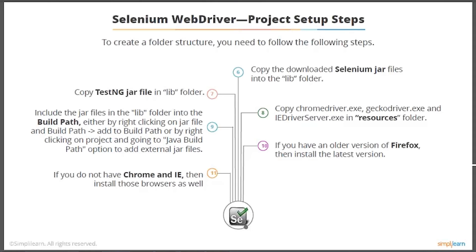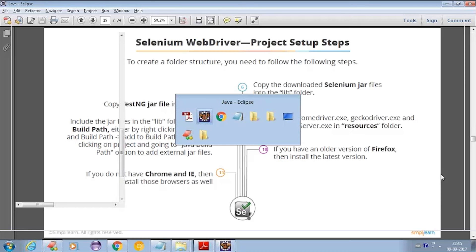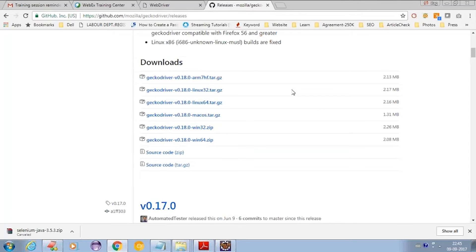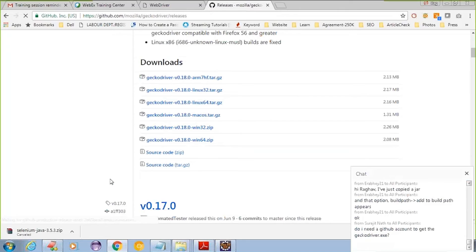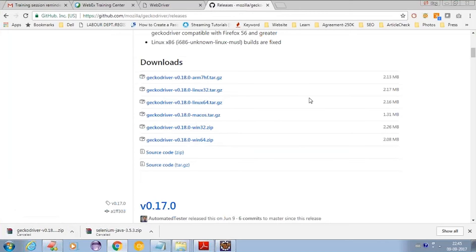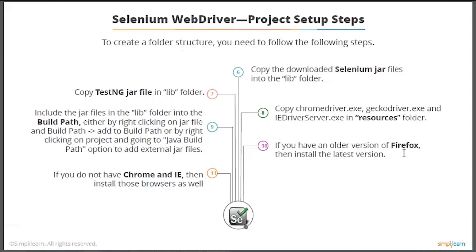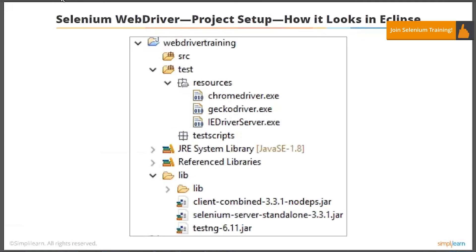If you don't have Chrome or Internet Explorer, install those browsers as well. To download the geckodriver, go to the geckodriver releases page, find the Windows ZIP file, click on it, download and unzip it — no GitHub account required. If you have an older version of Firefox, install the latest version. Make sure you have Chrome, IE, and Firefox as we'll be working on all these browsers.